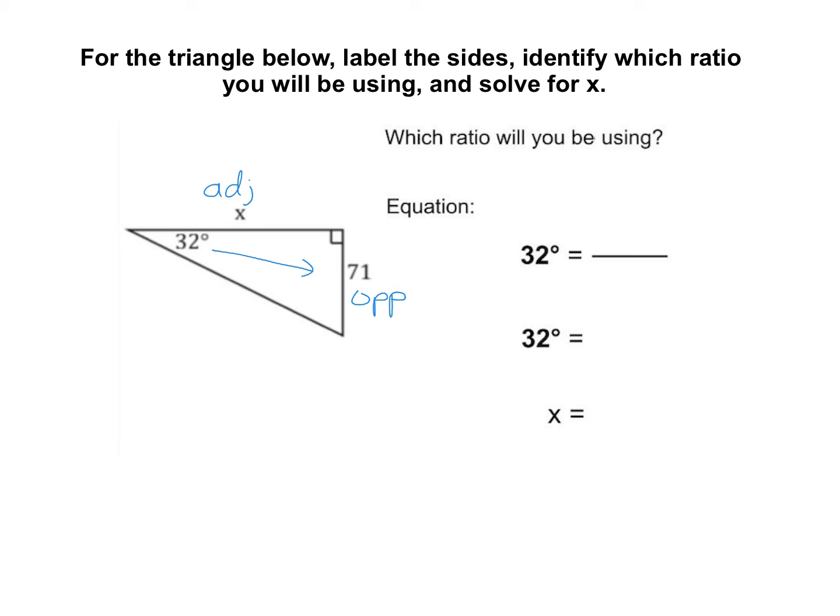Now, look at your phrase SOHCAHTOA and figure out which one uses opposite and adjacent. That's the TOA in SOHCAHTOA. So we're going to use a tangent ratio, and the equation that we would write would be the tangent of 32 degrees.